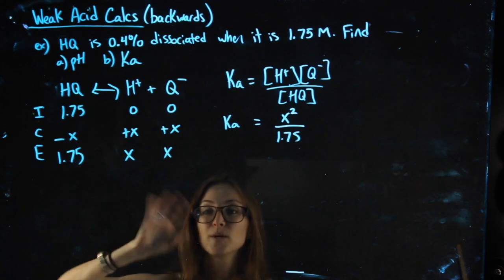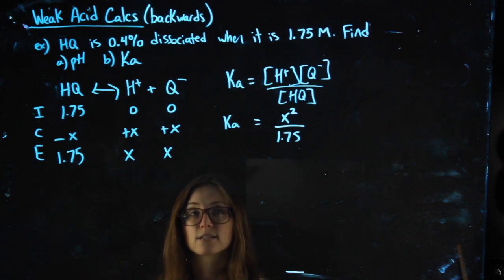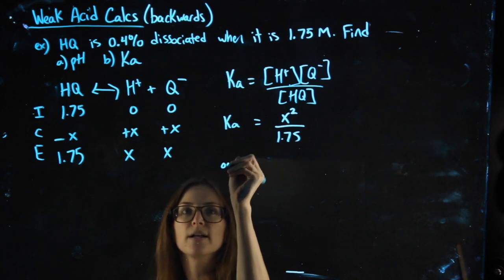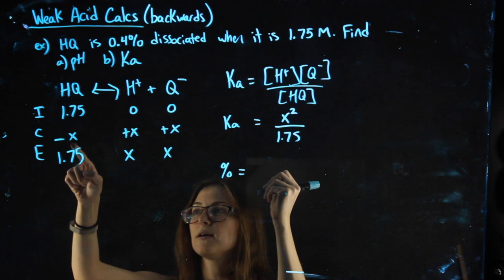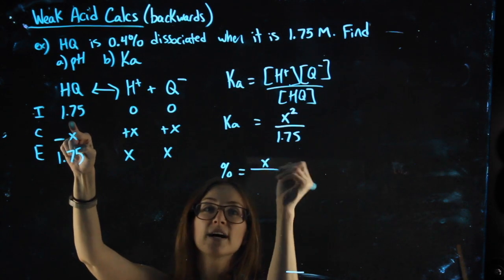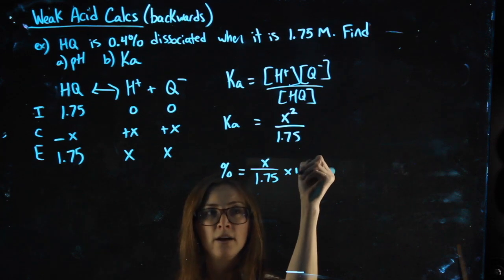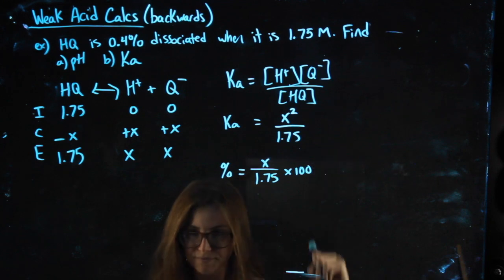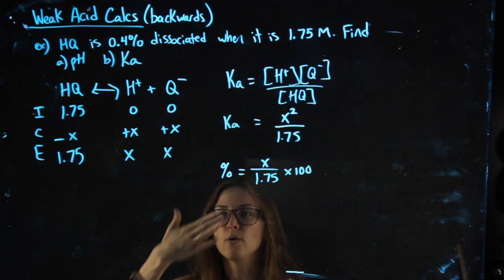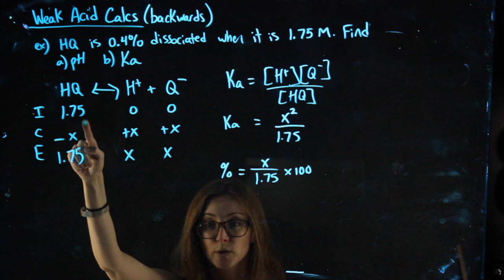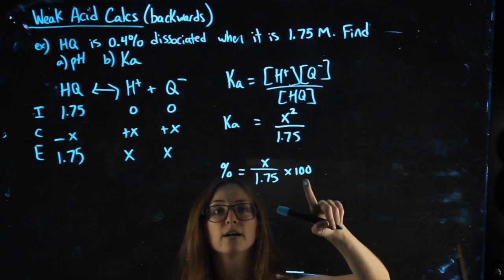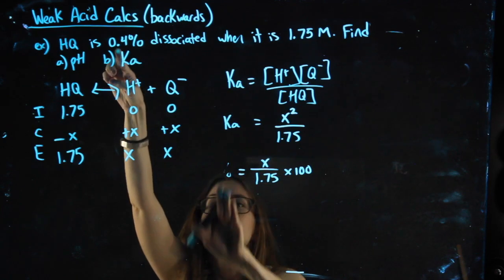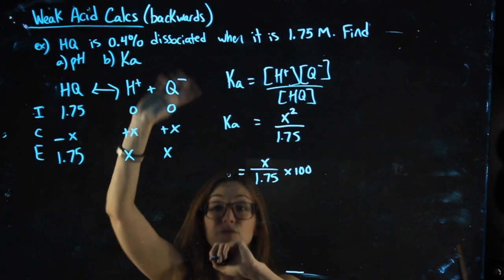So let's pretend we did know what X was, that we were able to solve this for X, and I asked you to find its percent dissociation. You'd say, okay, well, its percent is going to be the amount that went away over whatever I started with times 100. So how much it dissociates, how much it went away out of how much we could have dissociated times 100. Well, I know that its percent dissociation is 0.04. So I can use this as a formula, or sorry, 0.4.